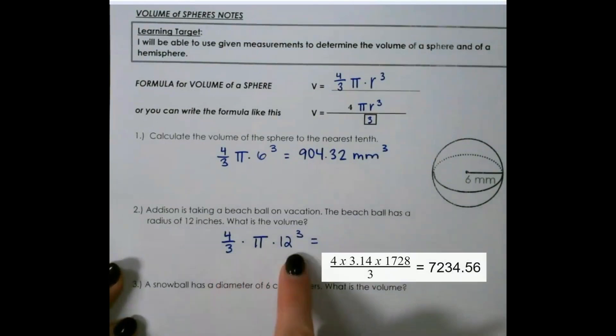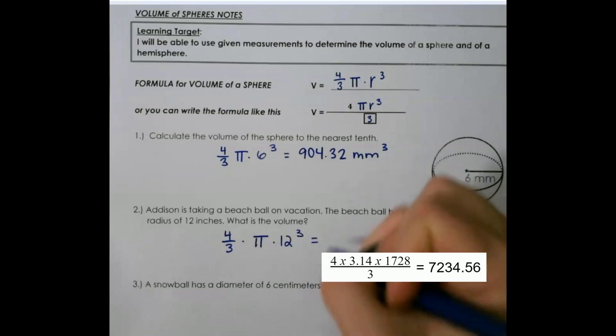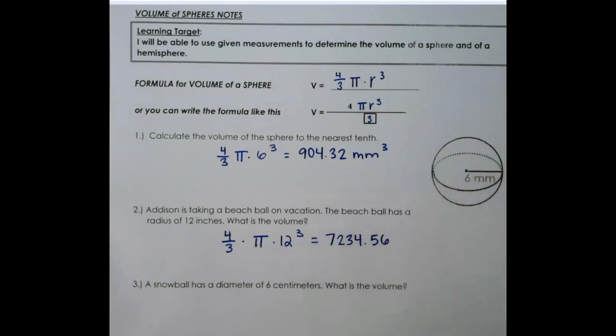So then, again, just plug this into your calculator and solve. And when I plug all of that in, I get 7234.56, and it would be inches cubed.